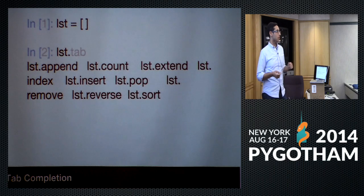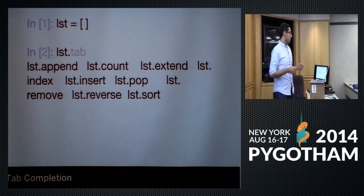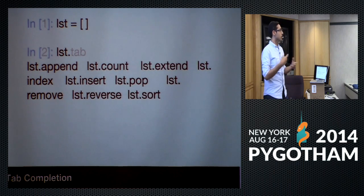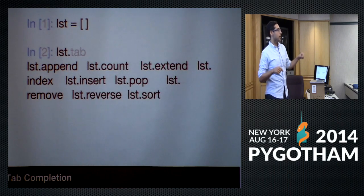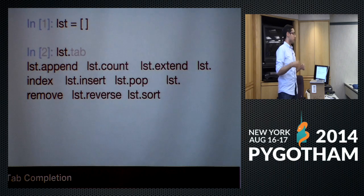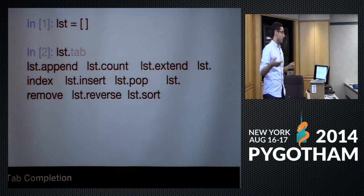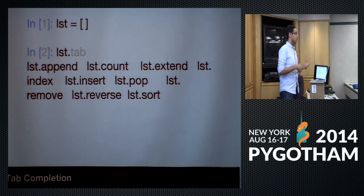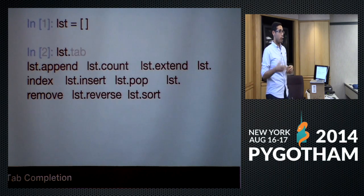Another great feature is tab completion. If you're ever exploring a new object and don't know what its attributes or functions are, just type dot and tab, and you'll see everything that thing can do. It's really almost better than reading the docs — you can very quickly see its entire capability. If you're coming into a new library or package you don't really understand, this is a great way to figure out what you're dealing with.